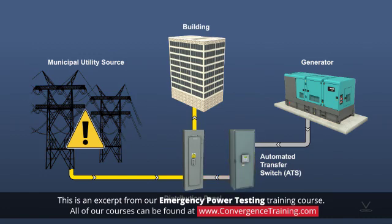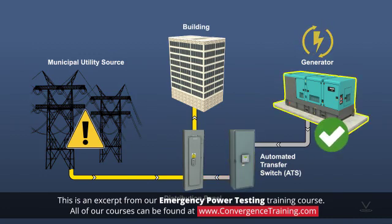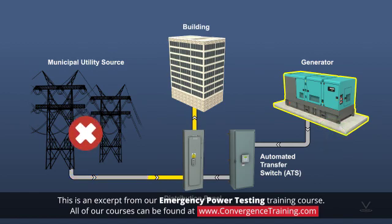1. The generator will start and its voltage is allowed to stabilize — 5 seconds. 2. The ATS will disconnect the utility power from the load. 3. The ATS will connect the generator power to the load.